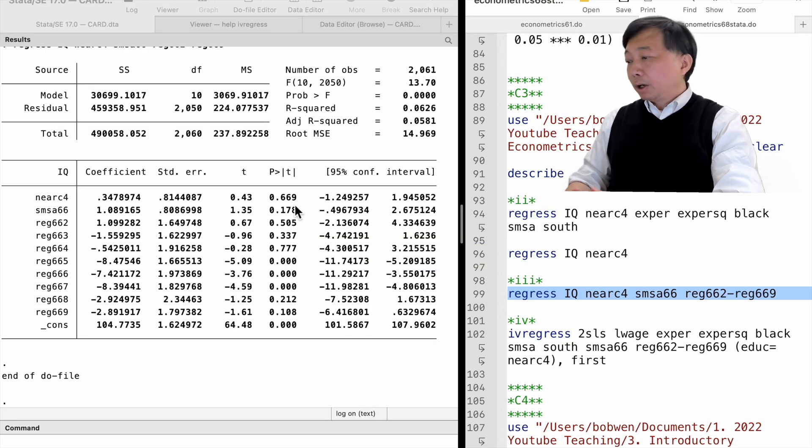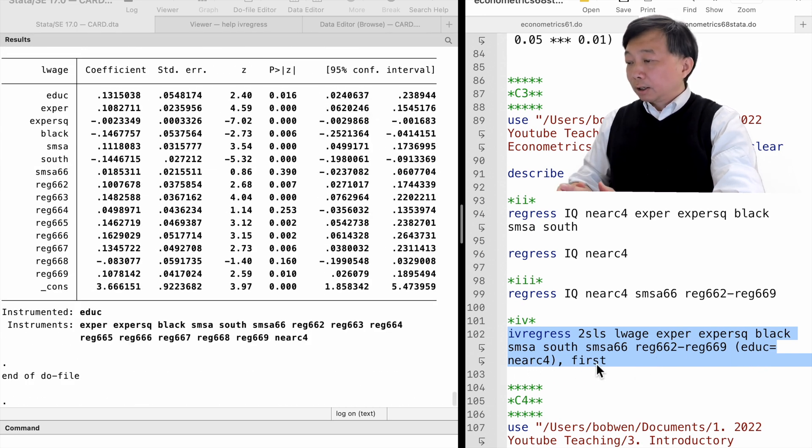We realize that once we control for the geographic variables in the structural wage equation, the instrumental variable near C4 is not likely to be correlated with the unobserved ability in the error term mu. In other words, the instrument exogeneity requirement is more likely to be satisfied. So we should include the geographic dummies in the model when we estimate it by two-stage least squares.